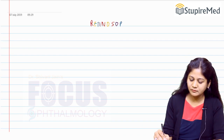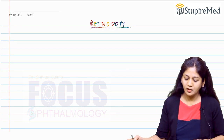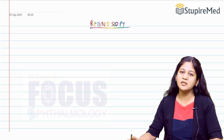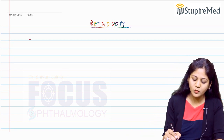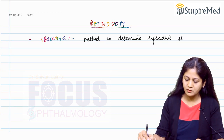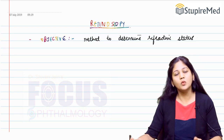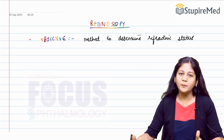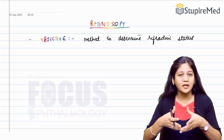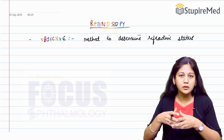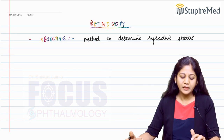Retinoscopy is an objective method of determination of the refractive status of an individual. There are subjective methods also, where the patient's judgment plays a role — like fogging, duochrome test, Jackson's cross cylinder, and pinhole method — where we can refine the objective findings of retinoscopy. We can give the best correction after our retinoscopic findings are concluded.